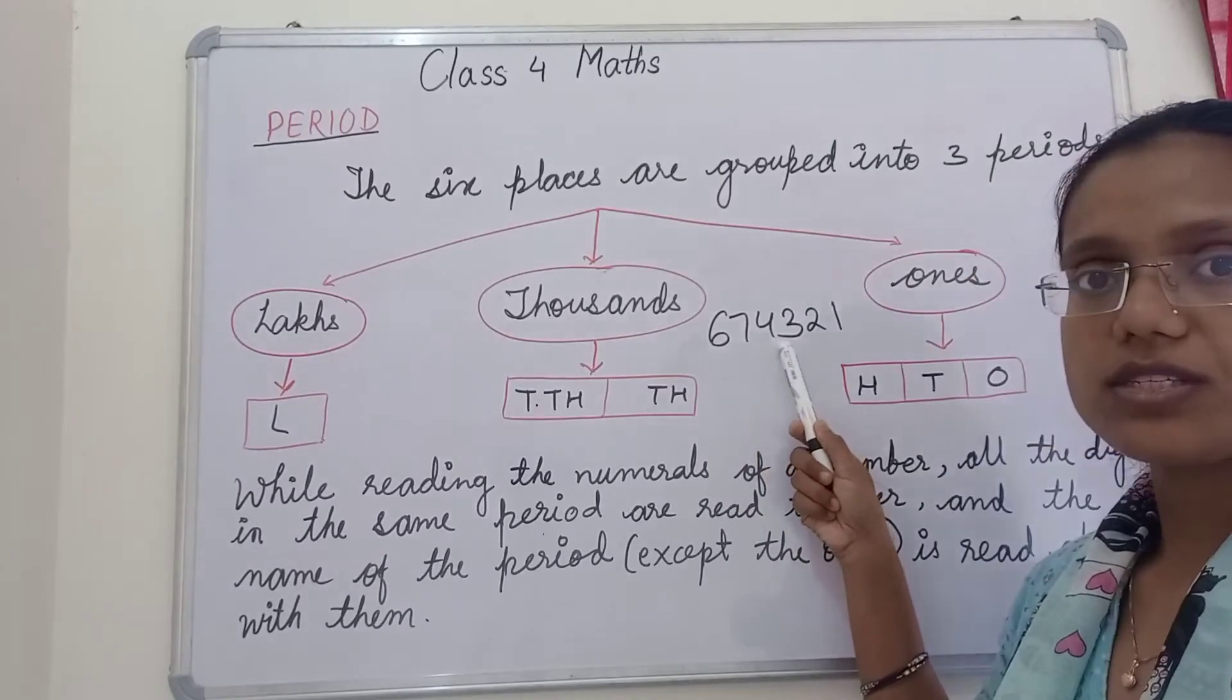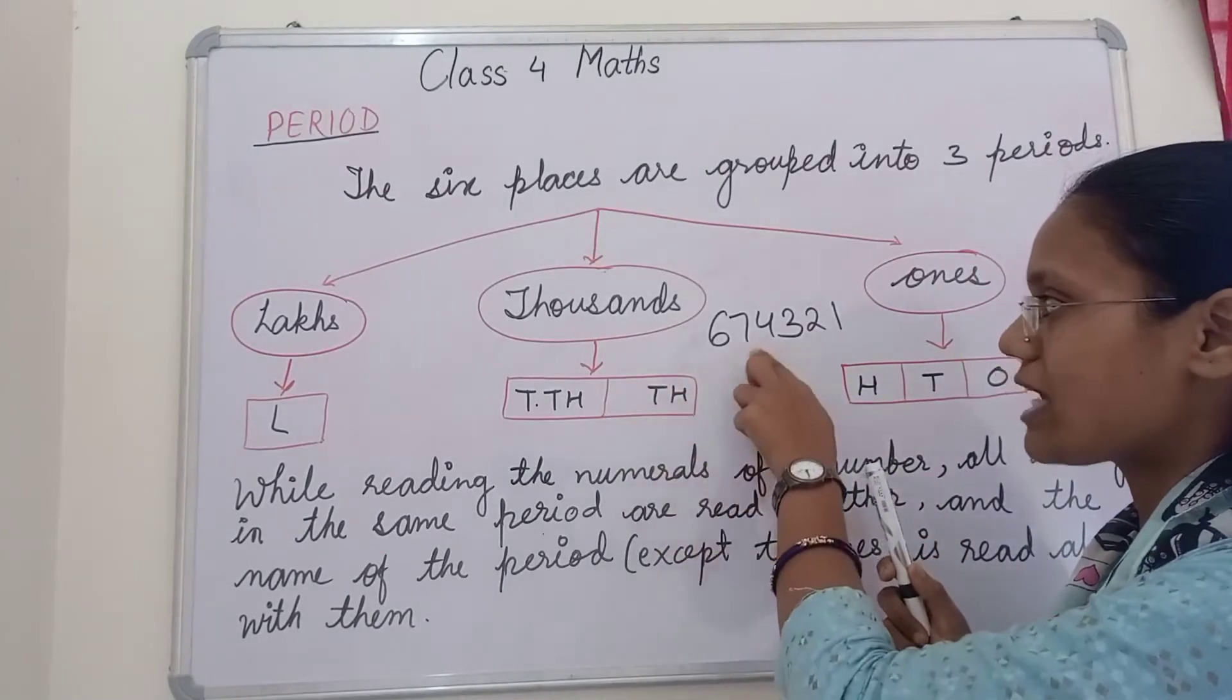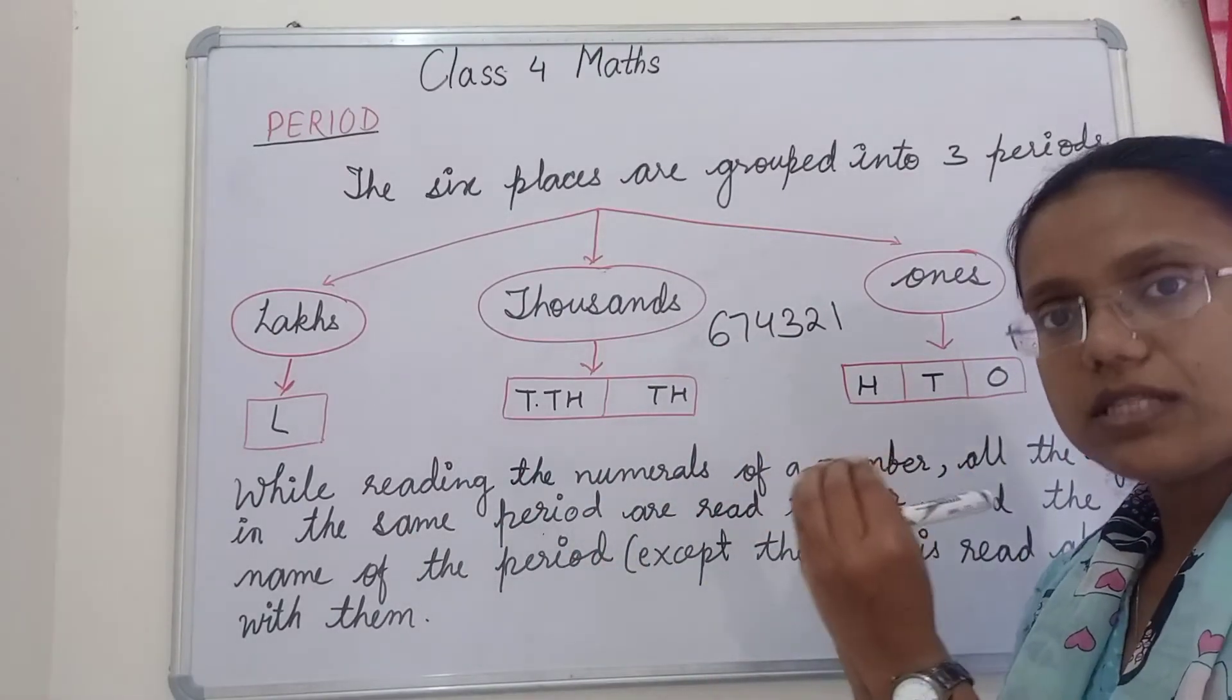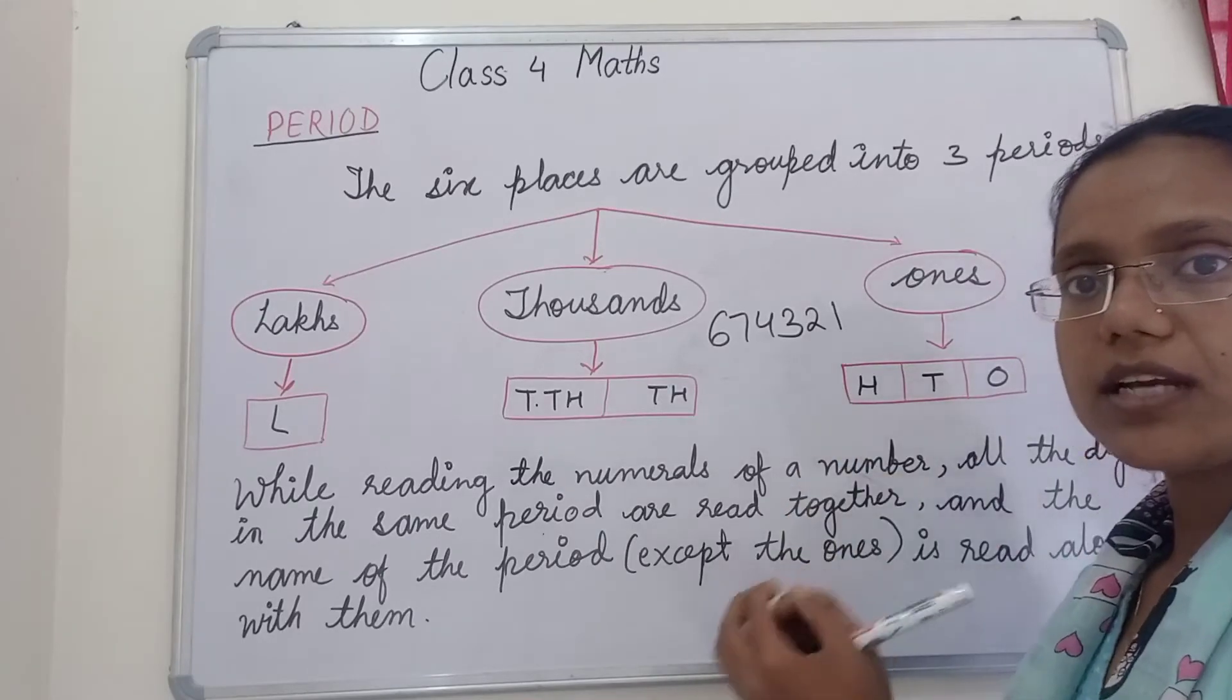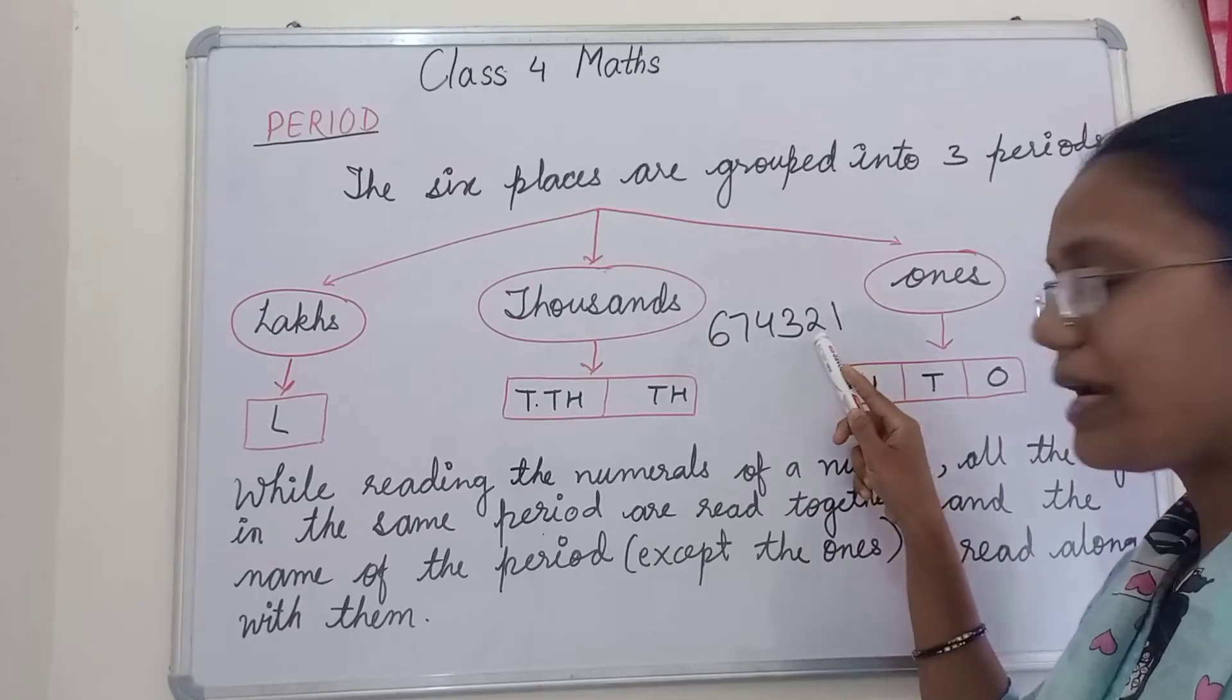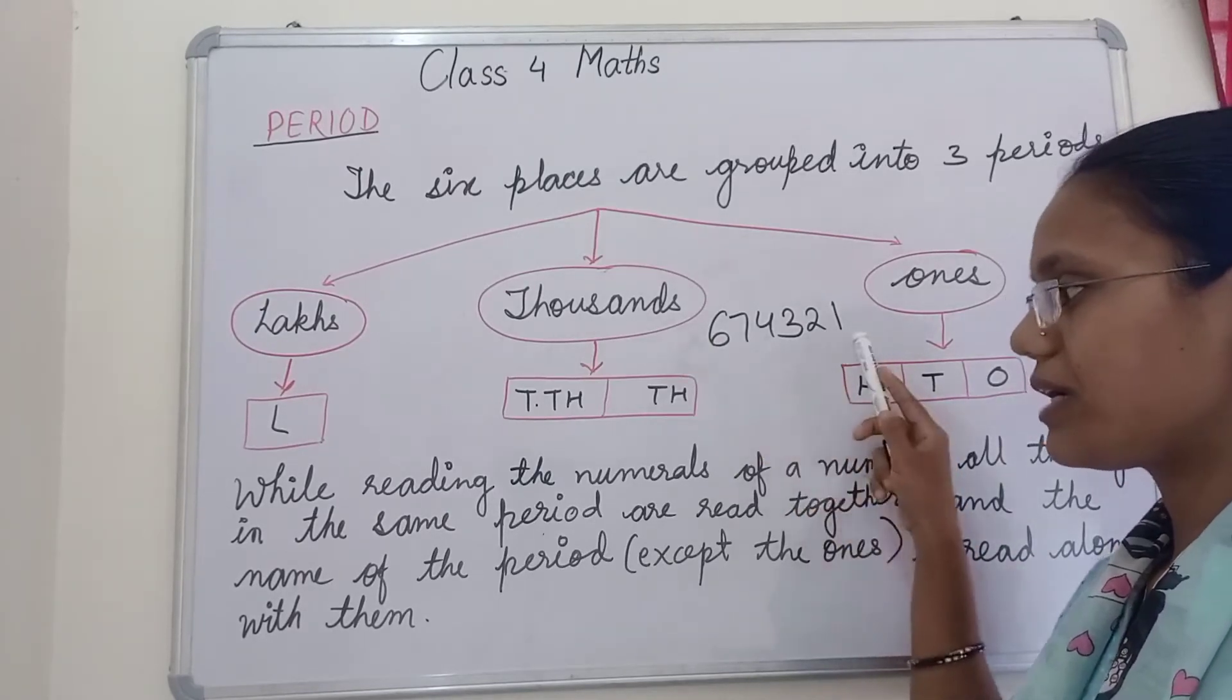Seventy-four thousand because these are in one period so we will read them all together. The numerals in the same period, we will read them all together. 74,321. This is how we read the number.